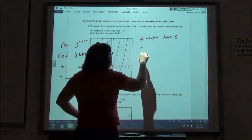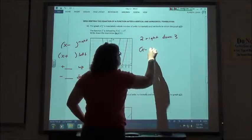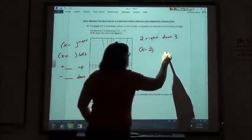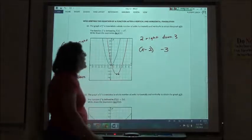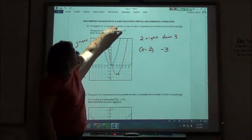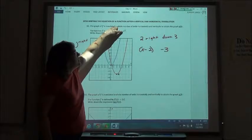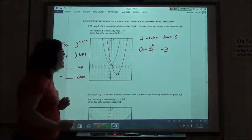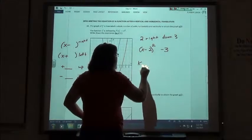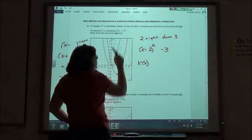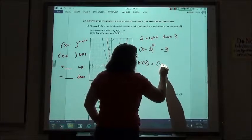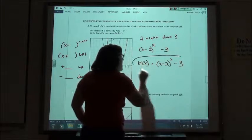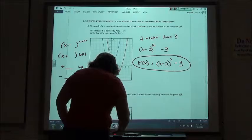So we know that with our x, we have to do x minus 2 in order to make it go 2 to the right. In order to go down 3, we're going to have a minus 3 on the end. But we have to look at our original graph. On our original graph, it was a squared one, which means the x part of this has to be squared. And so k of x, which is our new function, is going to be equal to x minus 2 squared minus 3.